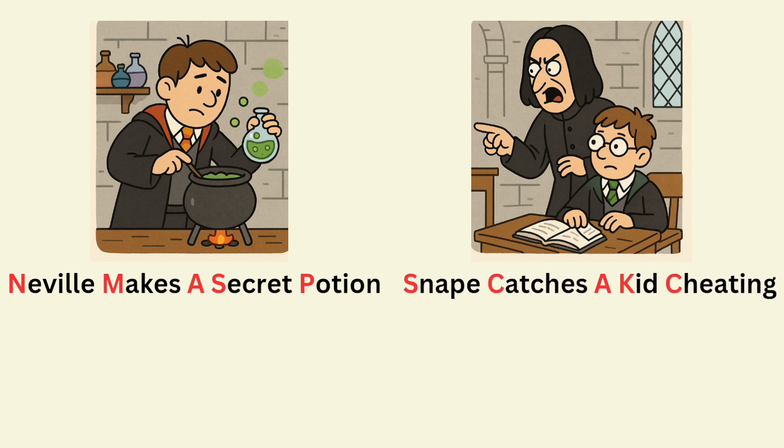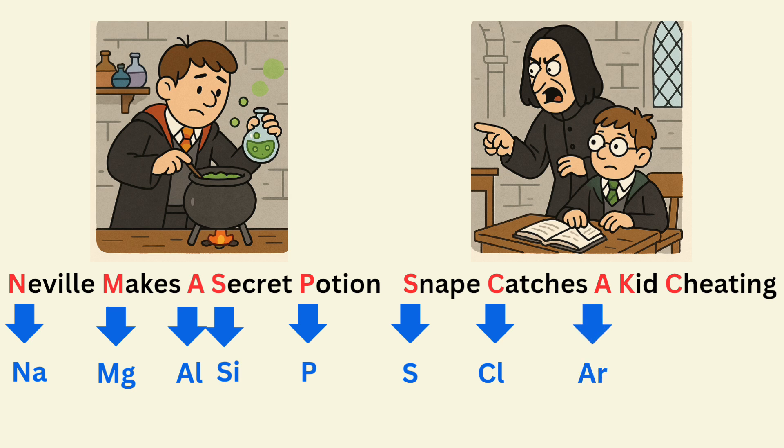Here, N stands for Na Sodium. M stands for Mg Magnesium. A stands for Al Aluminium. S stands for Si Silicon. P stands for P Phosphorus. S stands for S Sulfur. C stands for Cl Chlorine. A stands for Ar Argon. K stands for K Potassium. C stands for Ca Calcium. Using this trick, you can write the first 20 elements of the periodic table.